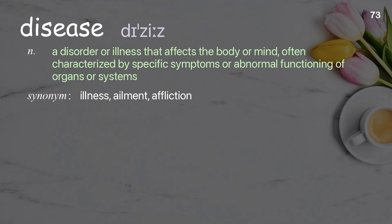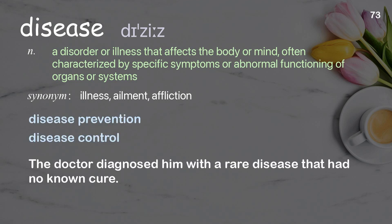Disease: a disorder or illness that affects the body or mind, often characterized by specific symptoms or abnormal functioning of organs or systems. Examples: disease prevention, disease control. The doctor diagnosed him with a rare disease that had no known cure.